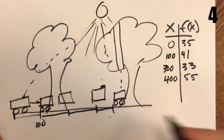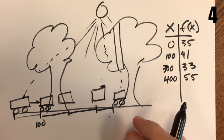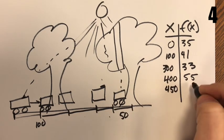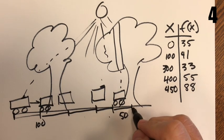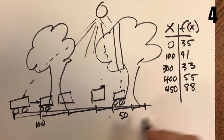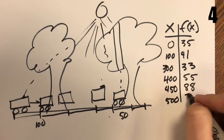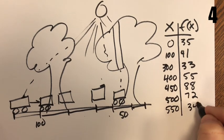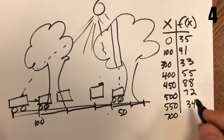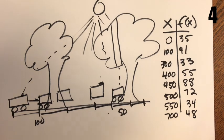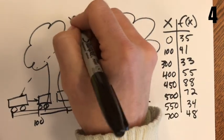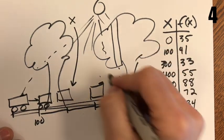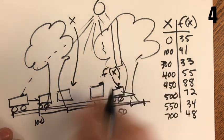At 450 feet we're at 88 candelas. After another 50 feet — 500 total — we're down to 72. At 550 feet we're at 34, and finally at 700 feet we're at 48 candelas. So if x is the distance that the car is driving from left to right and f(x) is the amount of luminous intensity falling on a particular spot on the roof, that's our data for this scenario.